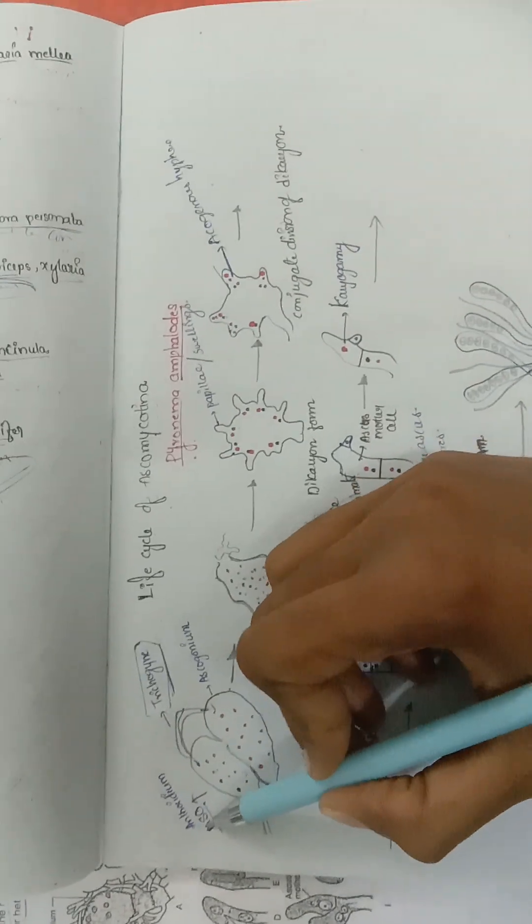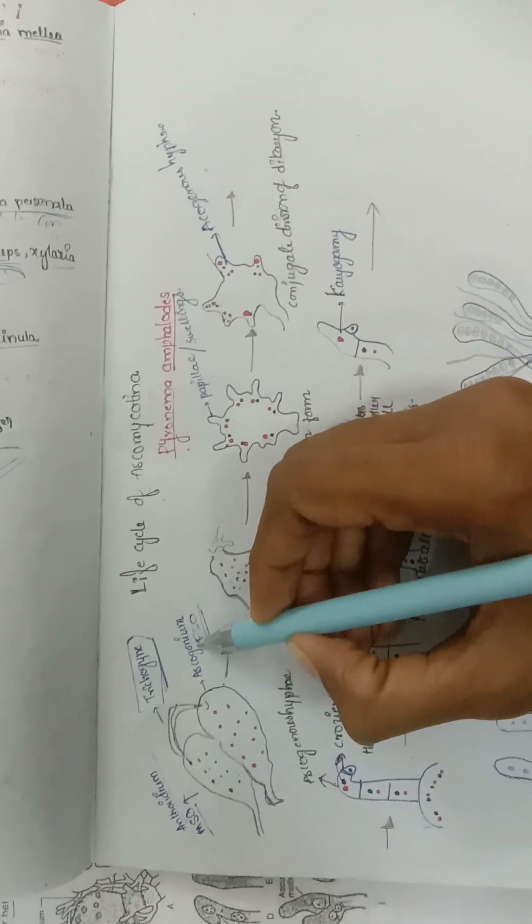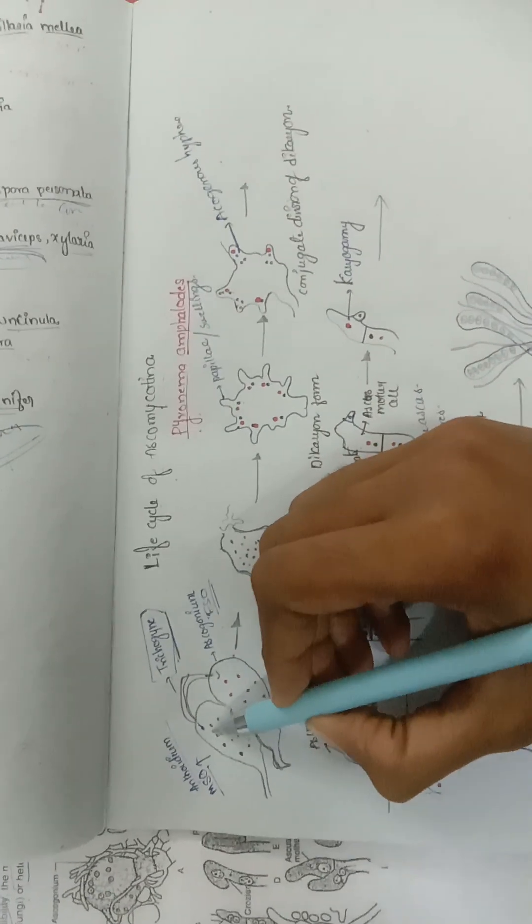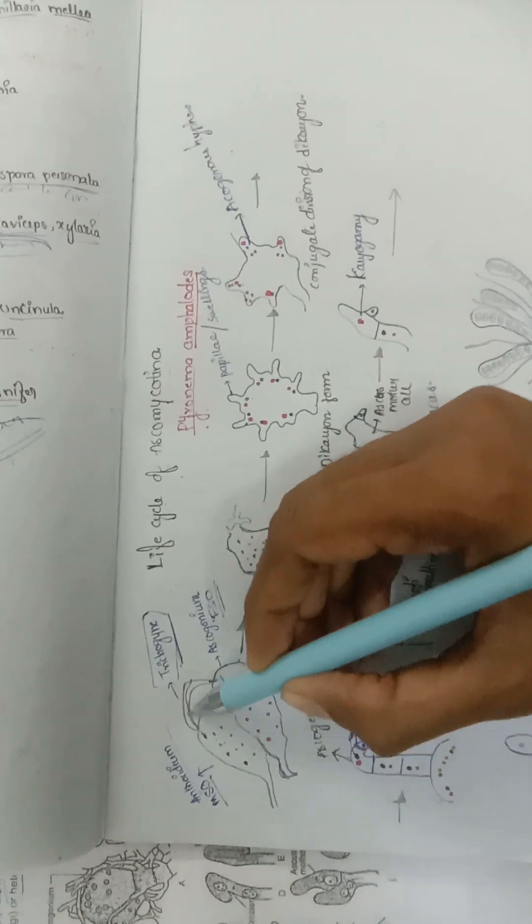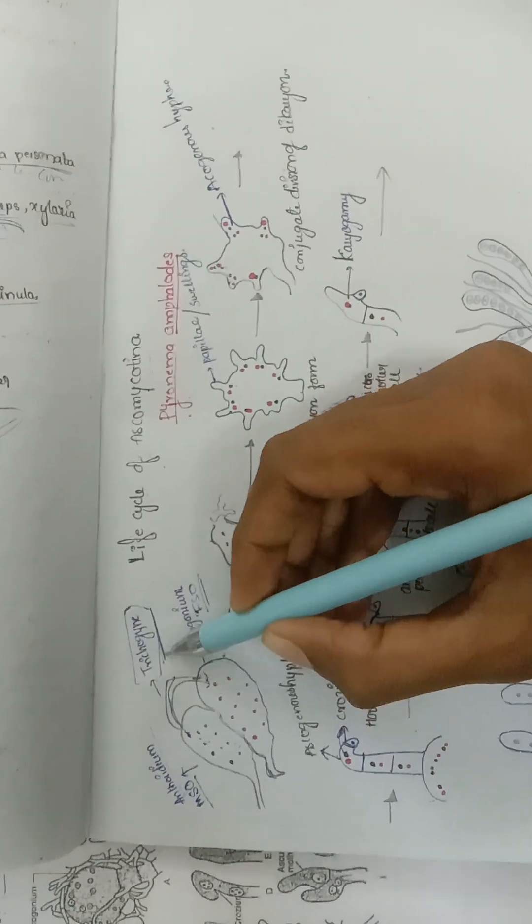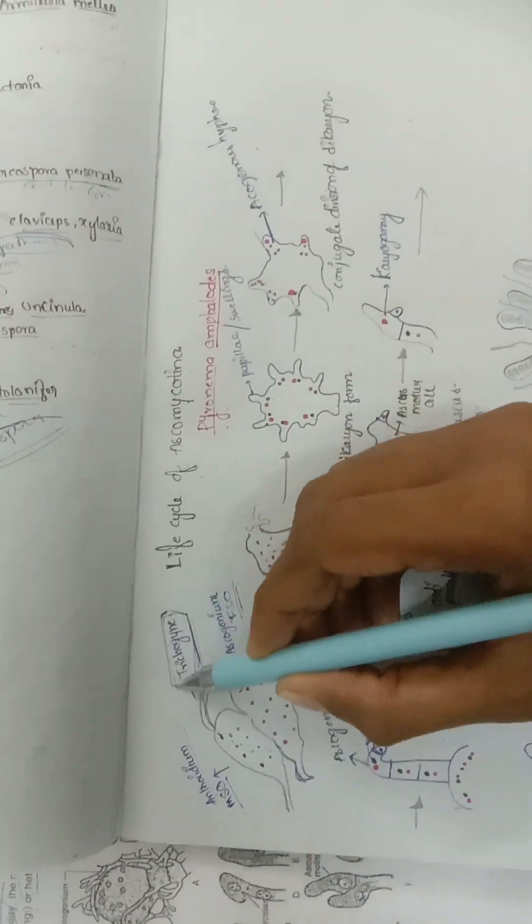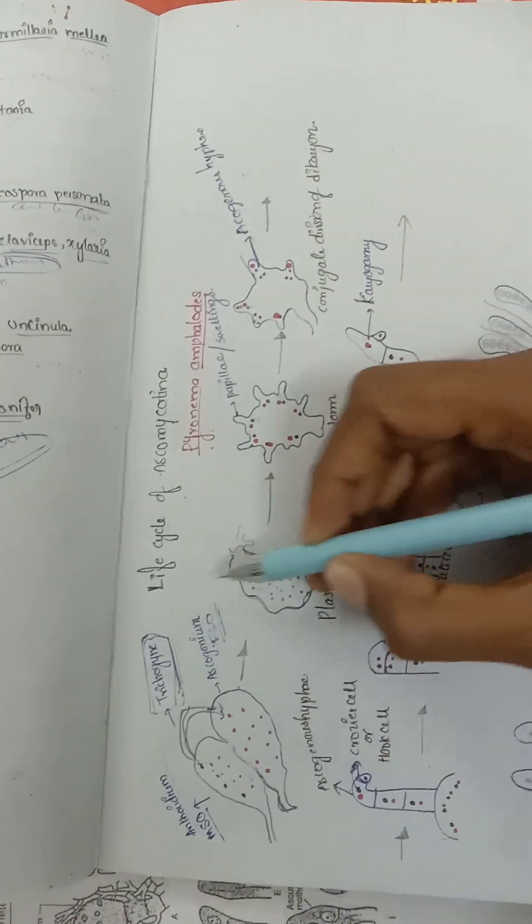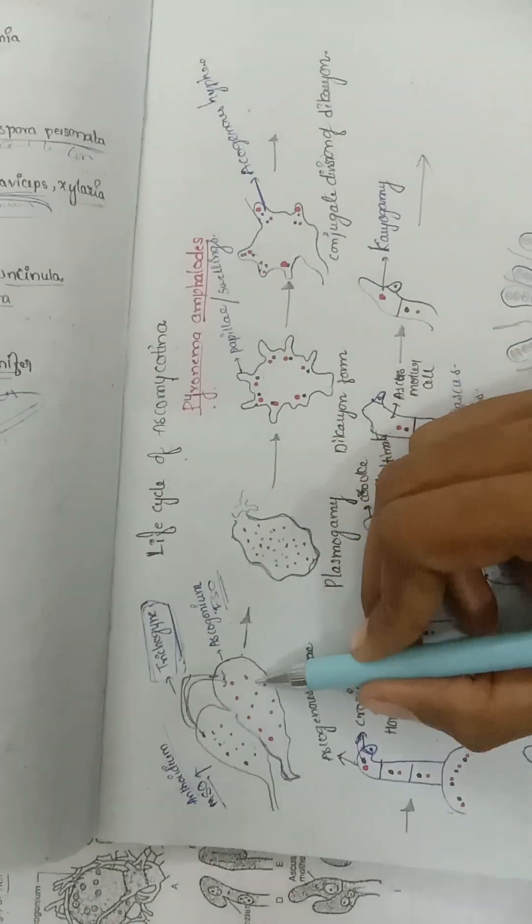The male sex organ is called antheridium and the female sex organ is called ascogonium. From the male sex organ, the male nuclei enter into the female sex organ through a structure called trichogyne, and after entering into the female ascogonium...